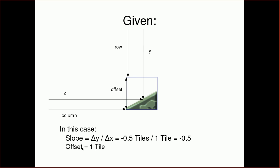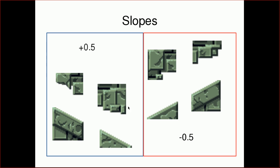We can calculate the slope of just one tile. As an example, you get delta Y over delta X, which is negative one half tiles — because Y going down is positive, so going up is negative, giving us a slope of negative 0.5. For upper right slopes it's positive 0.5, for the lower left slope it's positive 0.5, and for the rest it's negative 0.5.